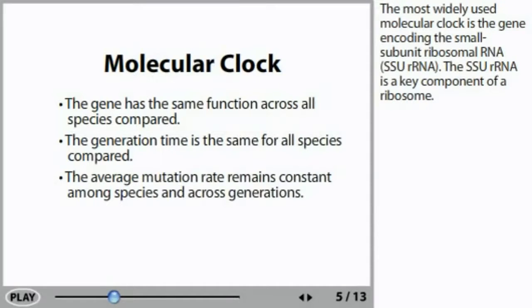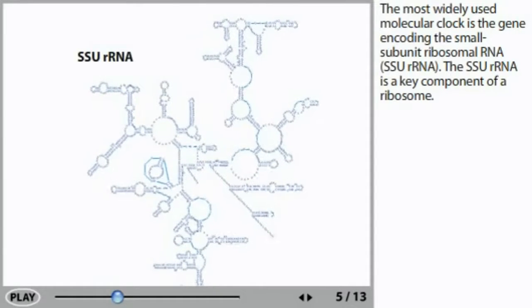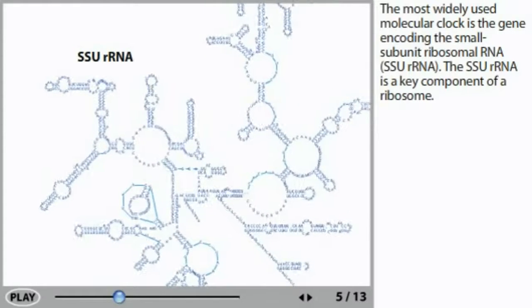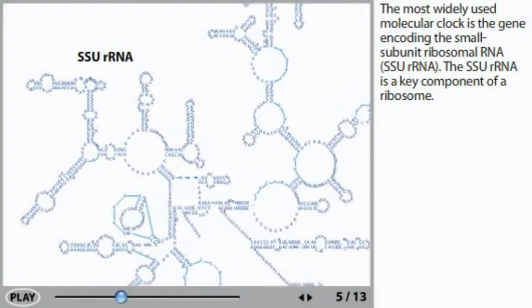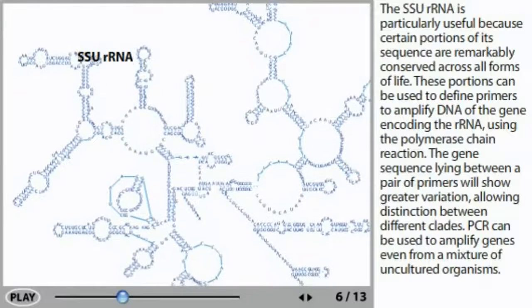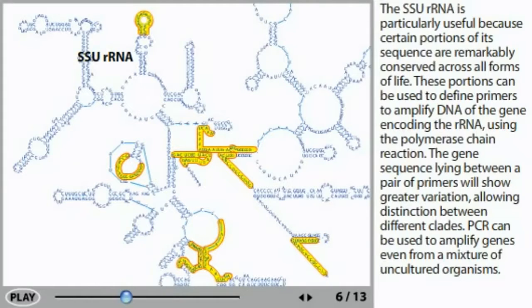The most widely used molecular clock is the gene encoding the small subunit ribosomal RNA, or SSU rRNA. The SSU rRNA is a key component of a ribosome. The SSU rRNA is particularly useful because certain portions of its sequence are remarkably conserved across all forms of life. These portions can be used to define primers to amplify DNA of the gene encoding the rRNA using the polymerase chain reaction.